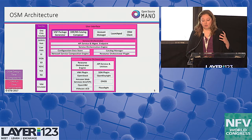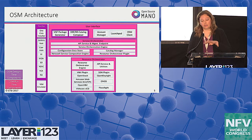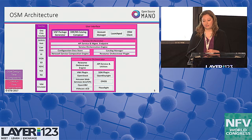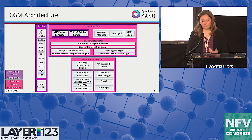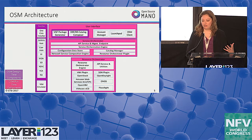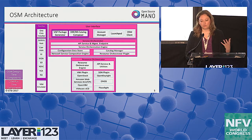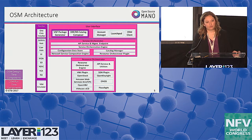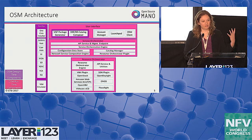The user interface module can be implemented in several ways as a UI. We also have the OSM client, which is a command line interface, as well as the Sol 5 compliant northbound API. Then we have the service orchestrator module — this is where catalog management, VNF onboarding, and network service description and modeling happens and is maintained and executed. Finally, we have the resource orchestrator, which is how we interface with our infrastructure layer — the connectors to the VIM, the SDN, et cetera.